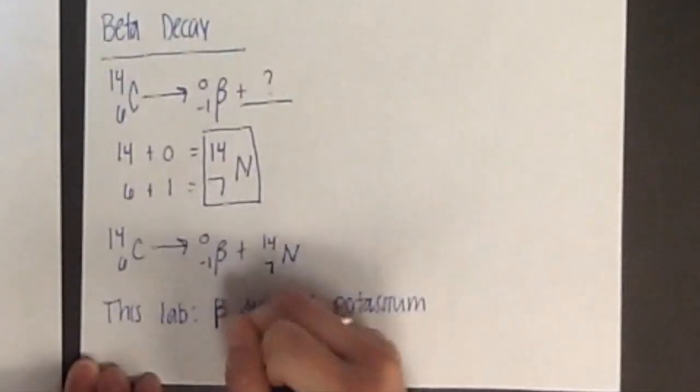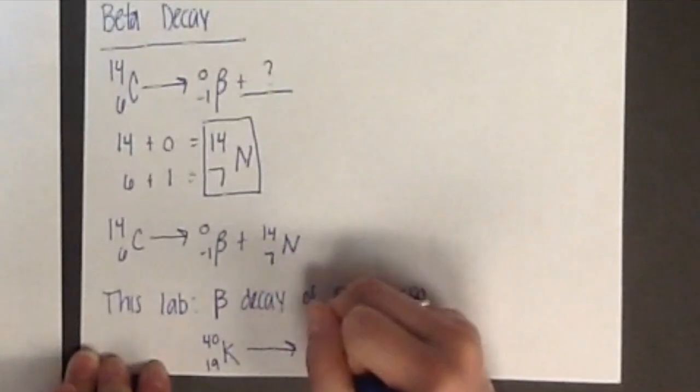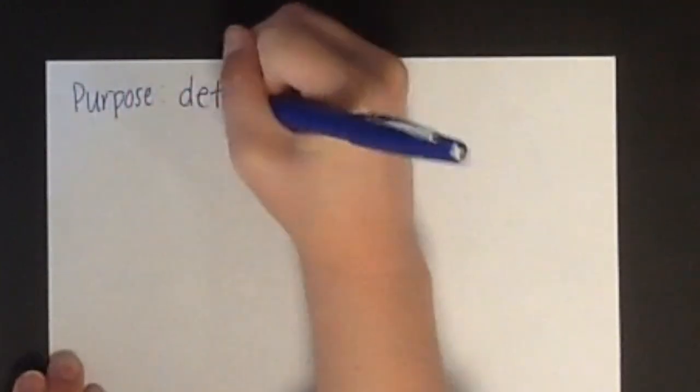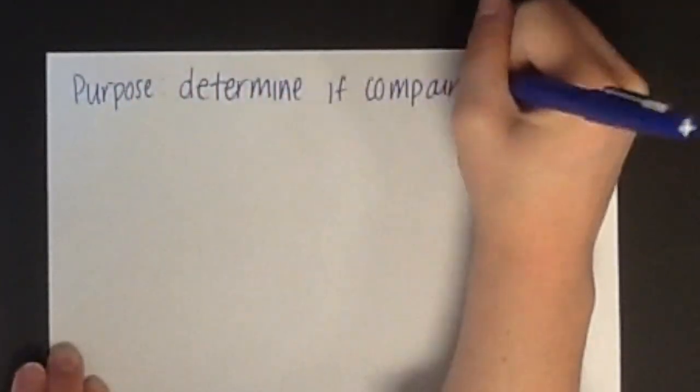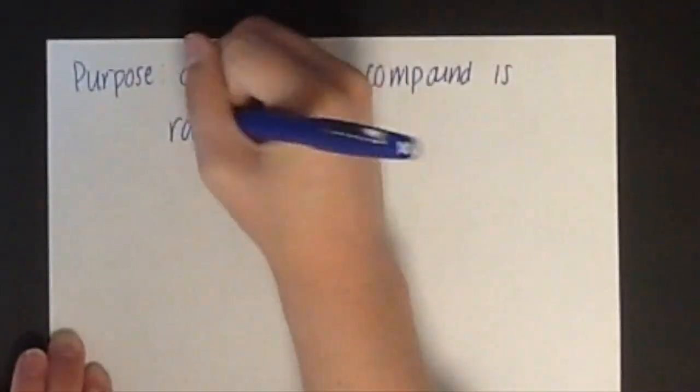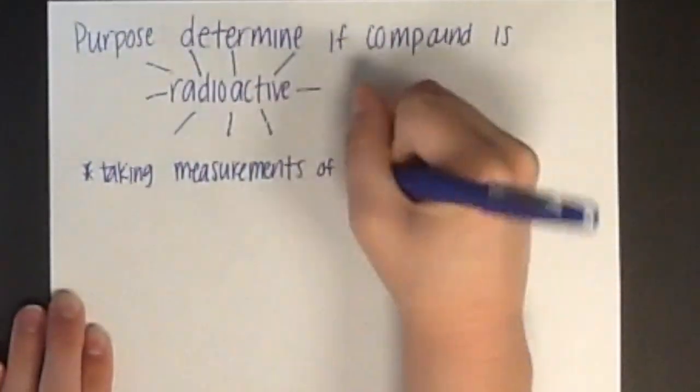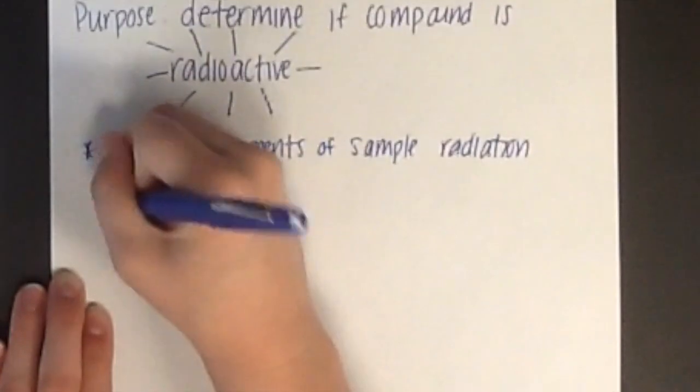In this experiment, we will be looking at the beta decay of potassium. The purpose of this experiment is to determine whether or not a sample of an ionic compound is radioactive. To do this, you will be taking several measurements of the radioactivity of your material using a Geiger counter.